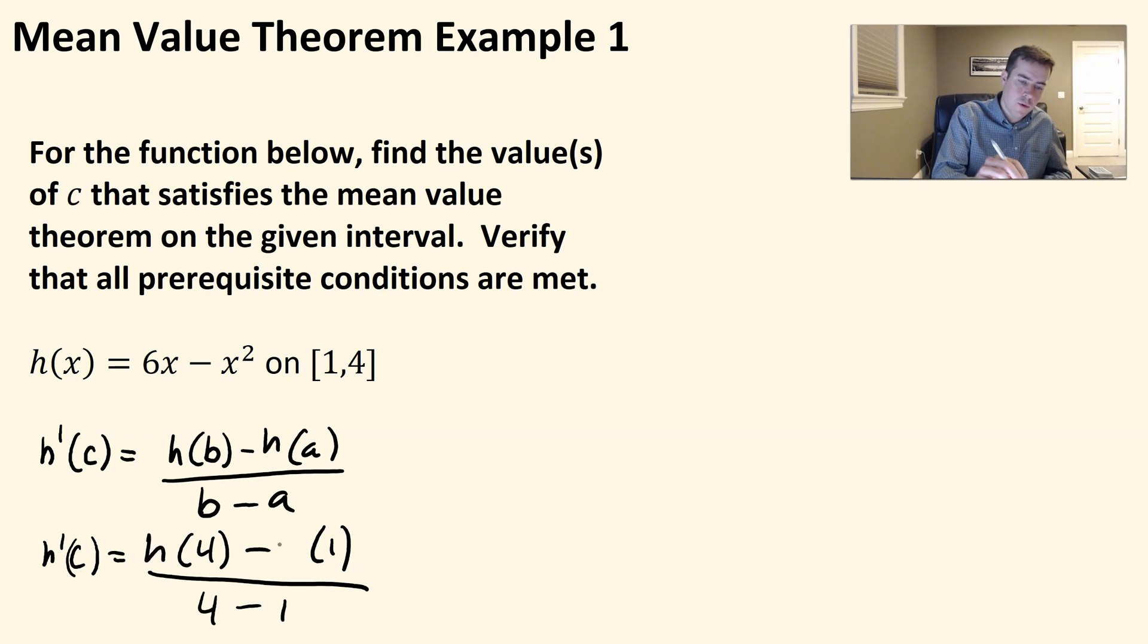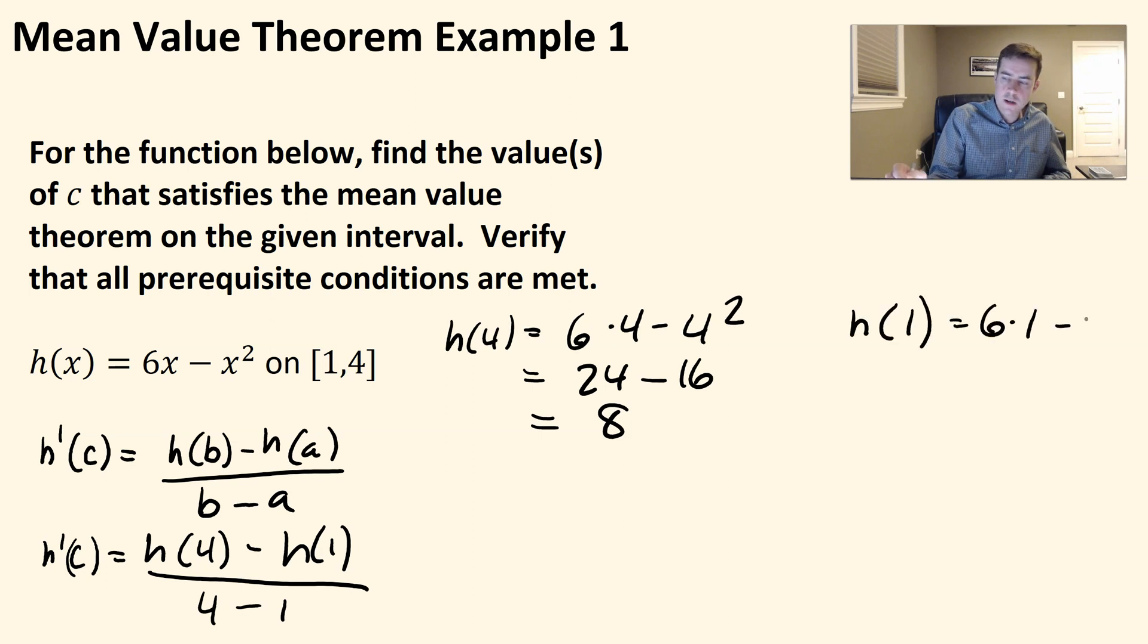So h(4) minus h(1). Let's see what h(4) would be. h(4) is going to be 6 times 4 minus 4 squared. So that'd be 24 minus 16, which would be 8. And then h(1), that would be 6 times 1 minus 1 squared. So that would just be 6 minus 1, which is 5.